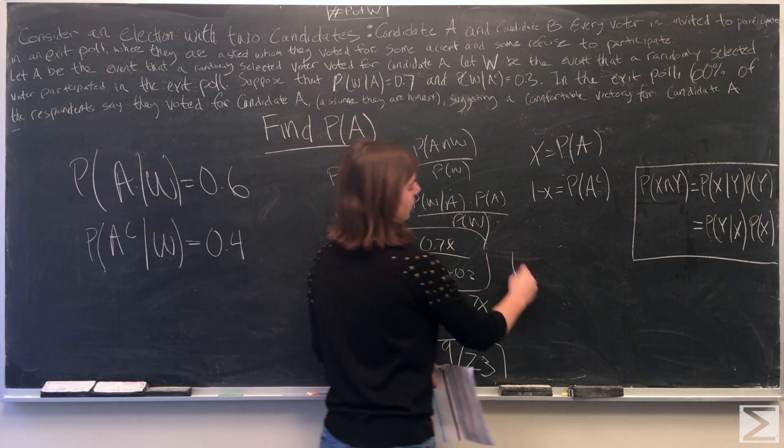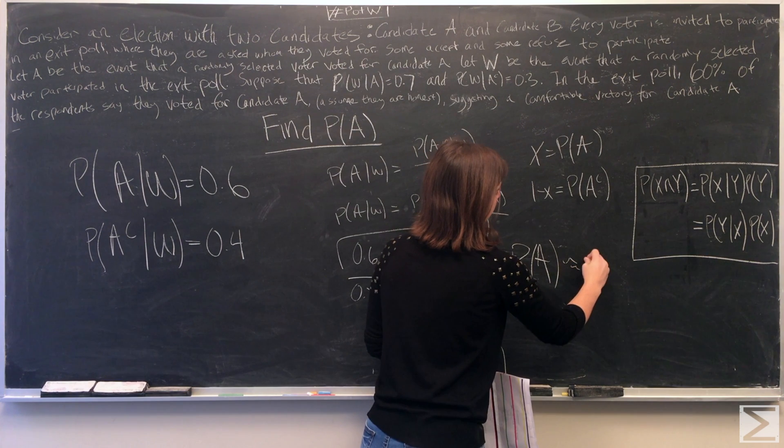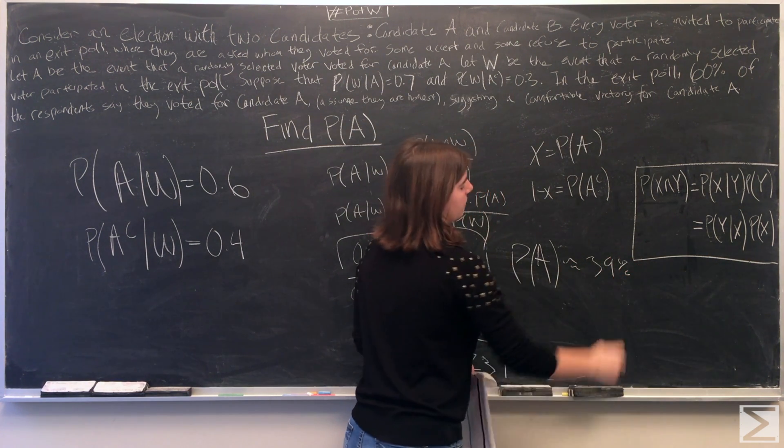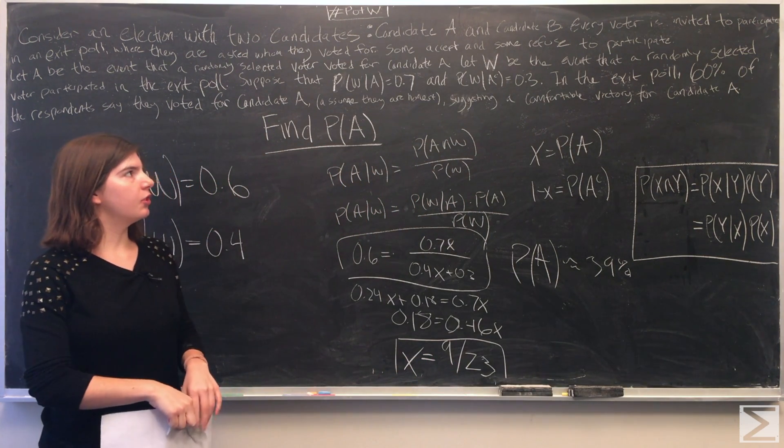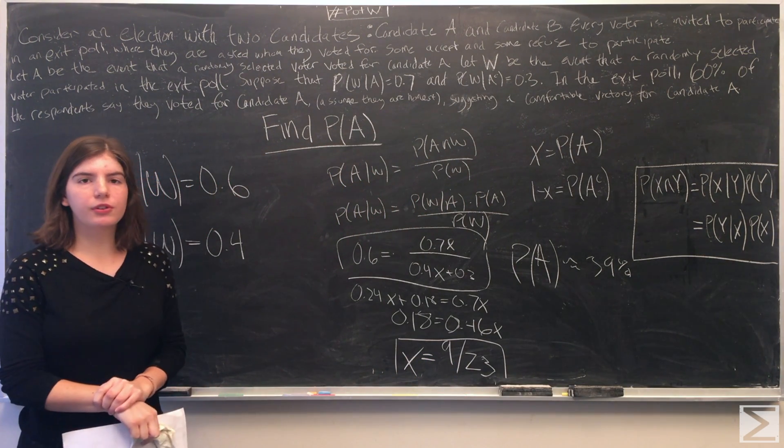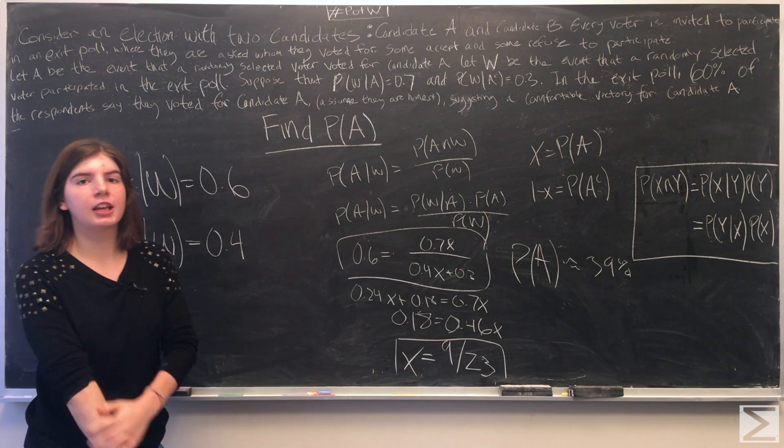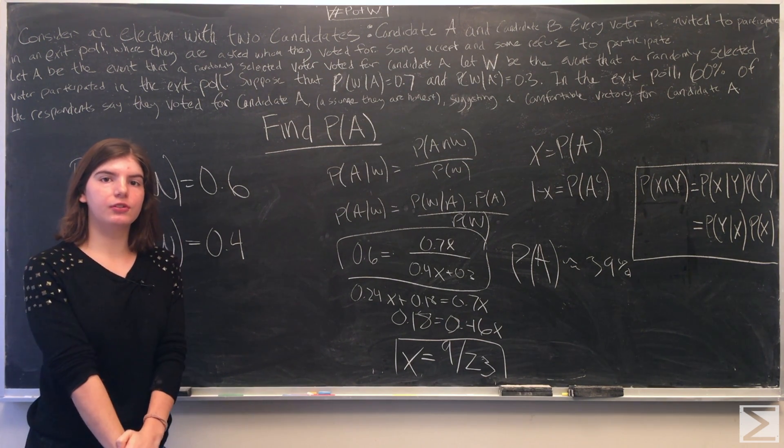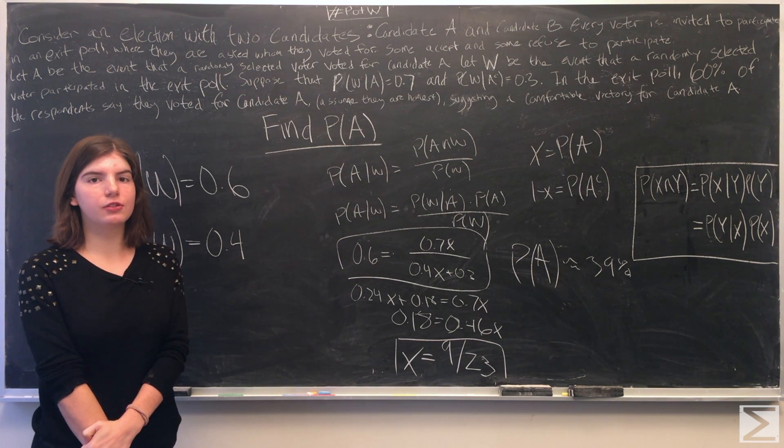The probability of A is about 39%, which is less than the exit poll said that 60% of people voted for candidate A, so it skews in A's favor, even though it looks like A is going to lose the election.